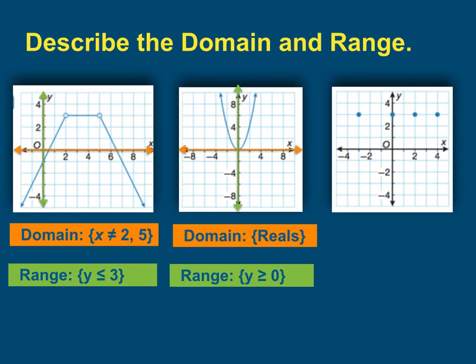And now on your discrete function, your domain are your x coordinates of those four points: negative 3, 0, 2, and 4.